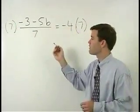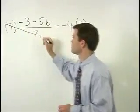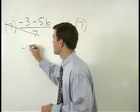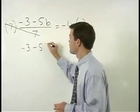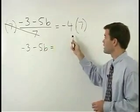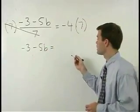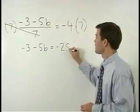On the left, our 7's cancel and we have negative 3 minus 5B. On the right, negative 4 times 7 is negative 28.